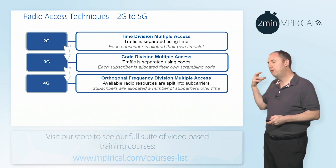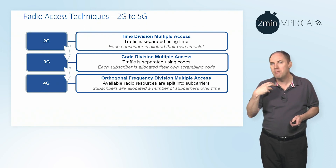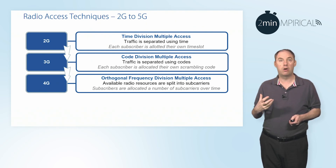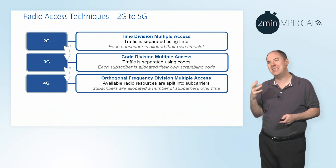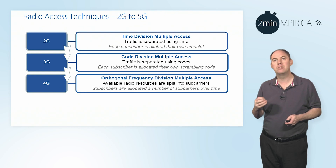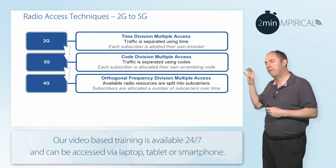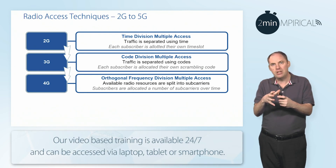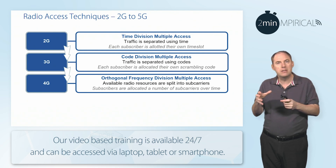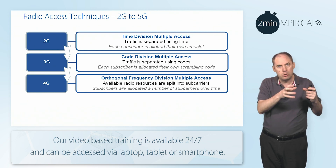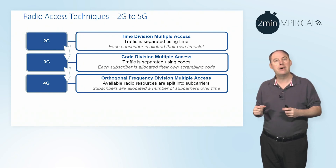4G changed it again, and we started using something that was even more efficient in terms of a radio access technique. It was referred to as OFDMA — Orthogonal Frequency Division Multiple Access. This is all about changing the radio environment such that there are lots of little things called sub-carriers, and we can group them together into resources and give these resources to different users.